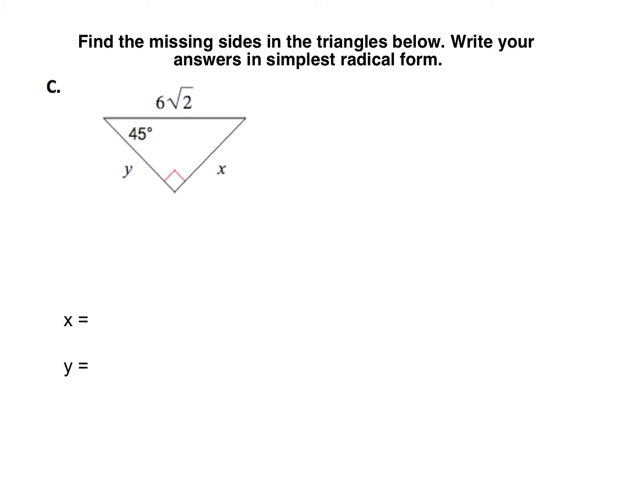For problem C, we have another 45-45-90 triangle, but this time it doesn't give us the length of either of the legs. What it gives us is the hypotenuse. You can see the hypotenuse is 6 root 2. The relationship for the hypotenuse in a 45-45-90 triangle is that the hypotenuse is equal to the leg times the square root of 2.